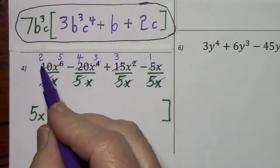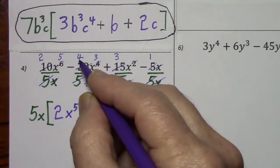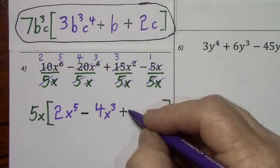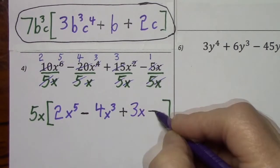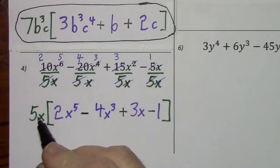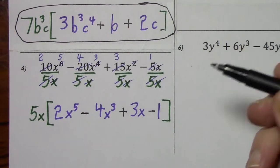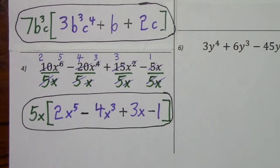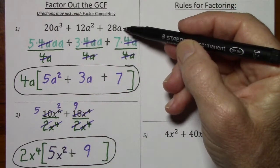So what's left standing? For the first term, we have 2x to the 5th. Bring down the negative — 4x to the 3rd. Bring down the positive — 3x. Bring down the negative, and finally all that's left standing is a 1. To emphasize why this 1 is so important: when you send your 5x back into each term, you're supposed to get back to your original polynomial. If I didn't have a 1 here, I wouldn't have any way to recover the negative 5x. So factoring out the GCF is an important tool when factoring any polynomial.